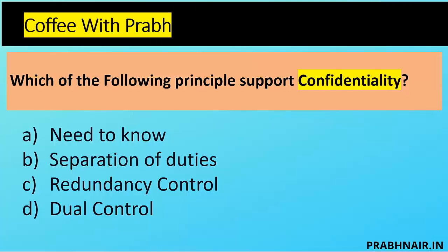Which of the following principles supports confidentiality? Confidentiality, integrity, and availability are the three important components of information security. Protection against unauthorized disclosure is confidentiality; protection against unauthorized modification is integrity; data must be available whenever required is availability. Out of four options, which one supports confidentiality?